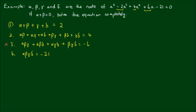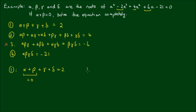I'll circle equations 1, 2, and 4 for use. Taking equation 1, alpha plus beta plus gamma plus delta equals 2. Since alpha plus beta equals zero, we have gamma plus delta equals 2.